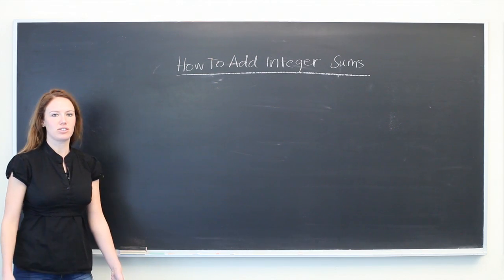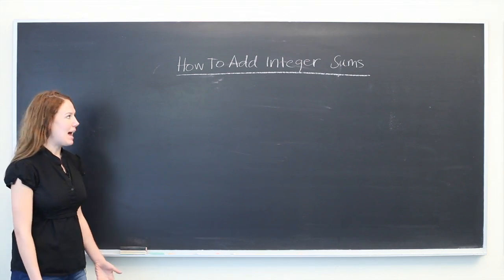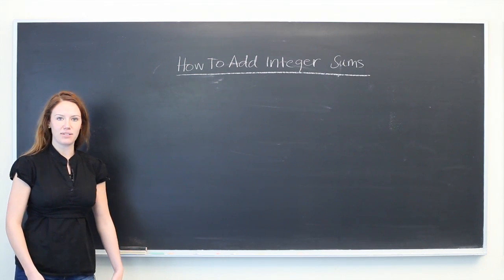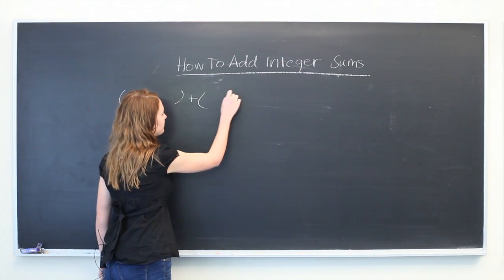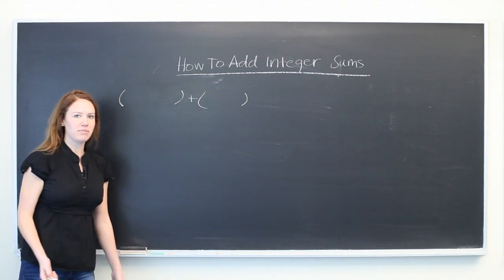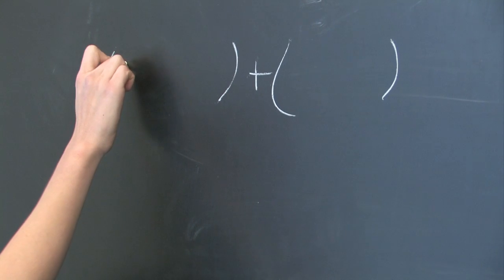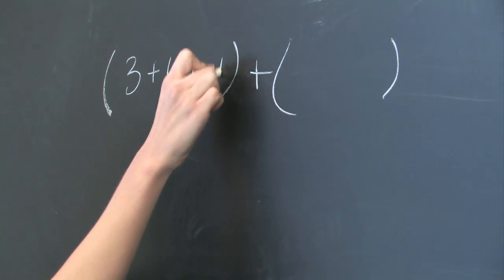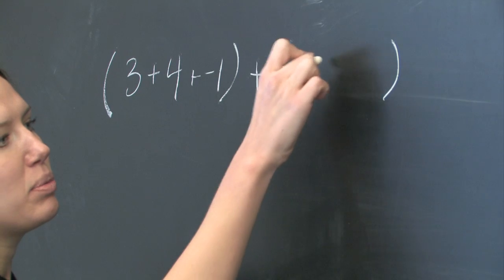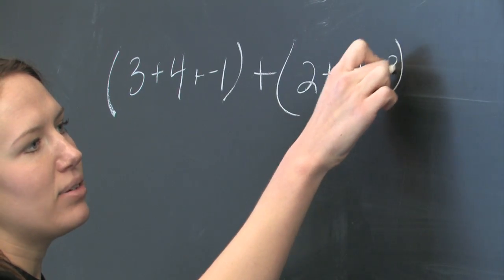Adding integer sums means adding two sets of addition problems. Let's get our two sets of parentheses here, and we're going to add integers. We'll say (3+4+(-1)) + (2+6+(-3)).